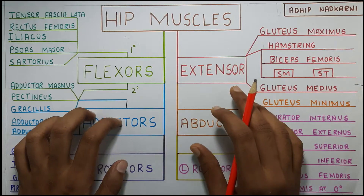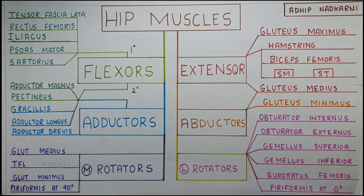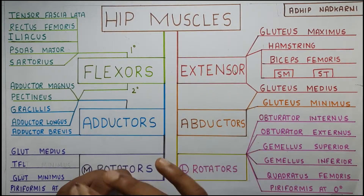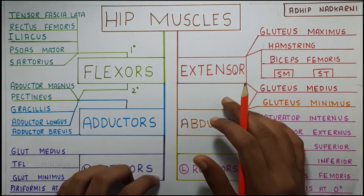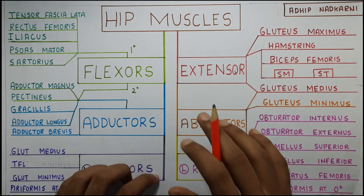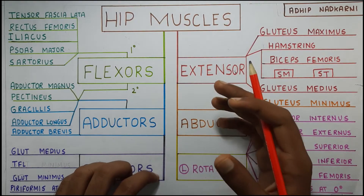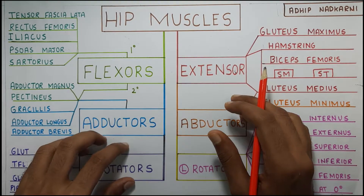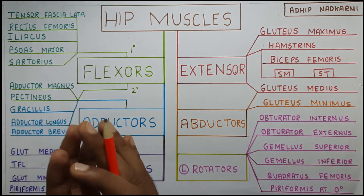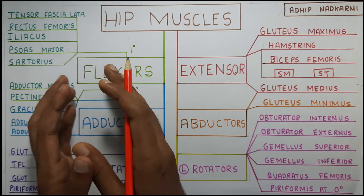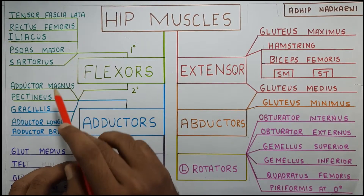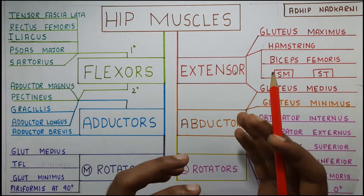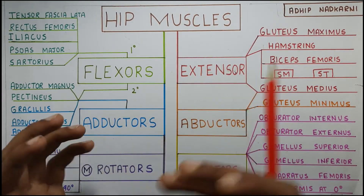Another interesting thing about hip joint muscles is that they change their function according to position. So depending upon the position of the hip joint, the same muscle might be performing a different movement.